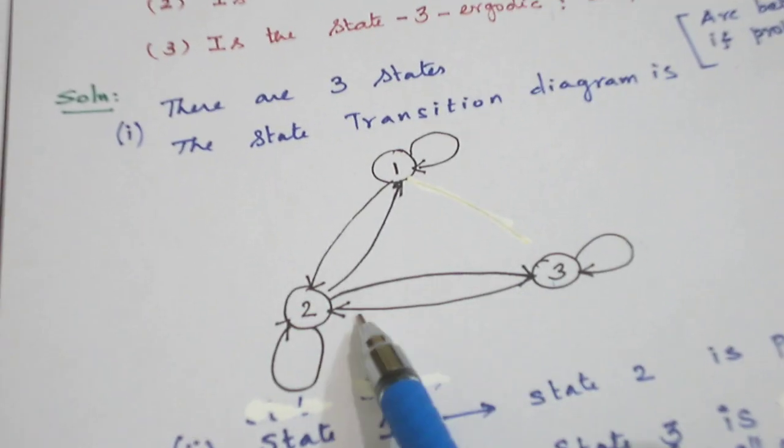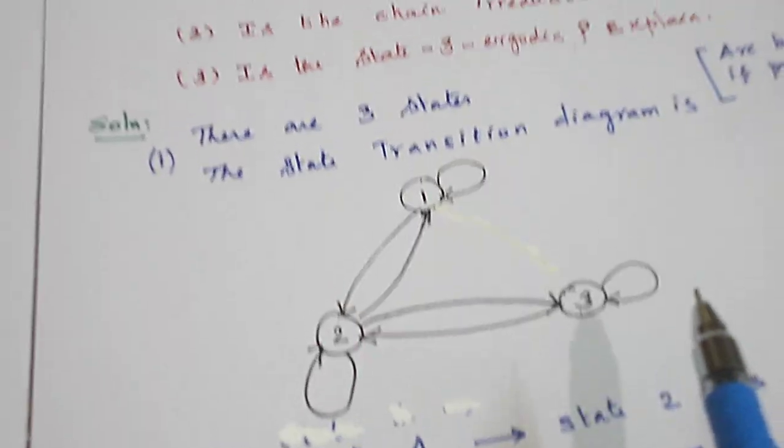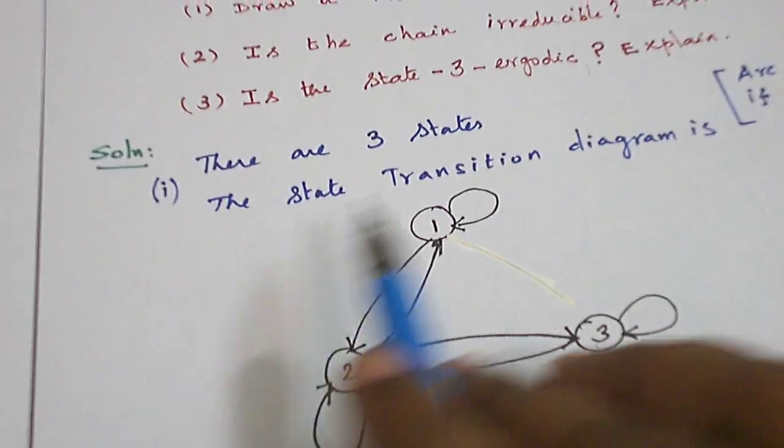Probability is non-zero, so draw an arc between 3 to 2 and 3 to 3 self loop. So this is a state transition diagram.